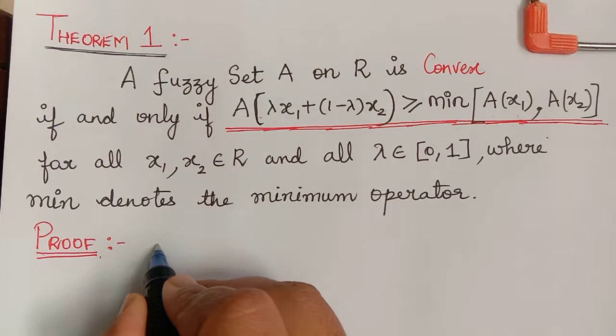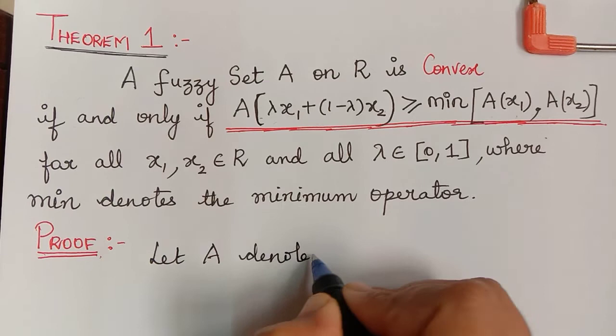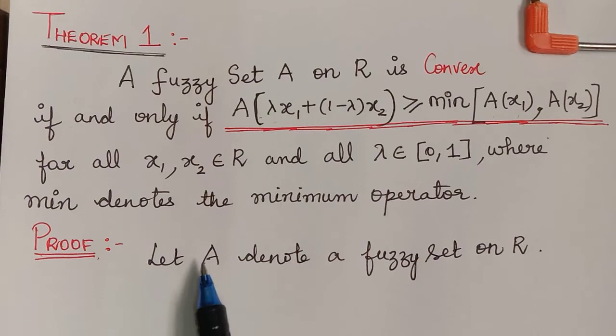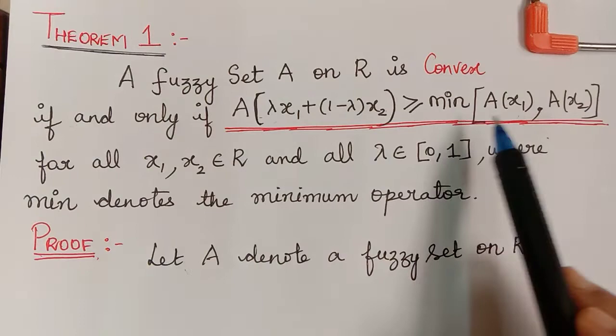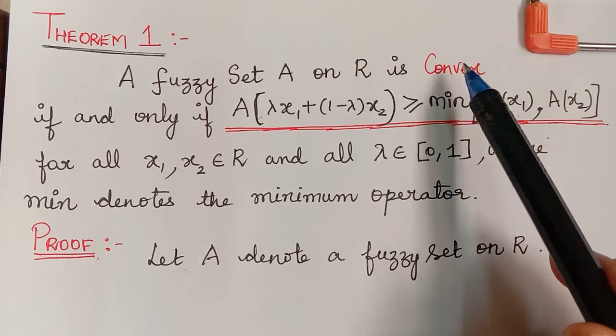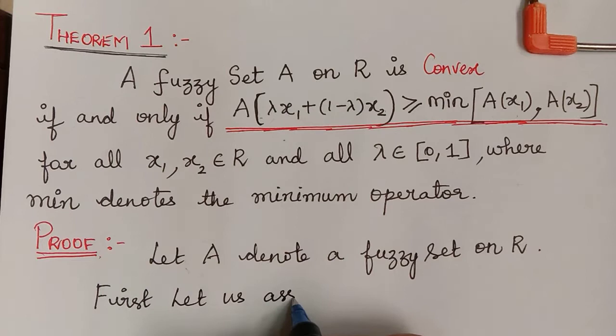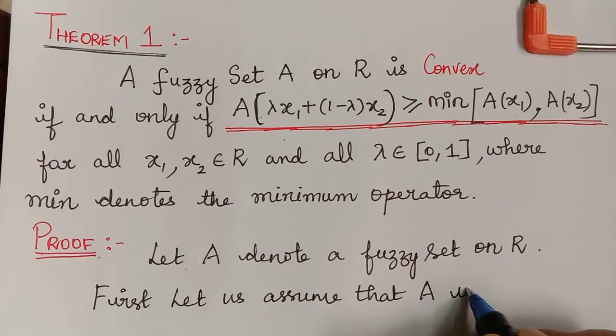Now let us prove this theorem. First we shall consider a fuzzy set — let capital A denote a fuzzy set on R. First let us assume that A is convex and we shall prove the inequality. In the converse part we shall assume the inequality and then prove that the fuzzy set A is convex.